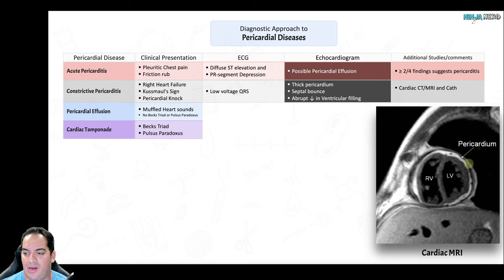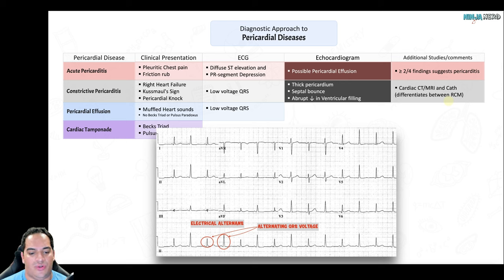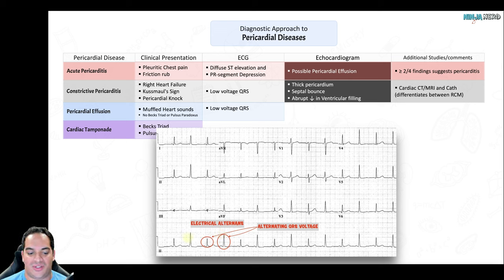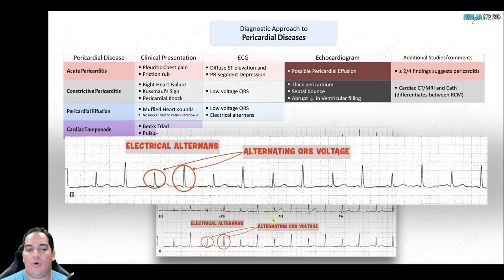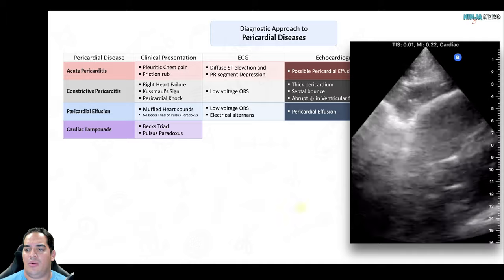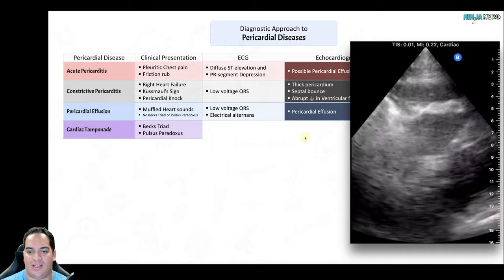For pericardial effusion: if a lot of fluid is present, the heart apex moves left to right in the fluid during the cardiac cycle, causing alterations in the amplitude of the QRS complex — known as electrical alternans. Echocardiogram showing fluid within the pericardial cavity helps make the diagnosis.